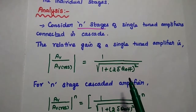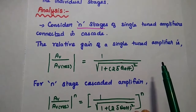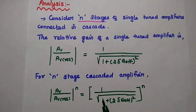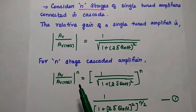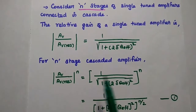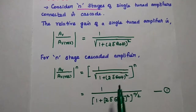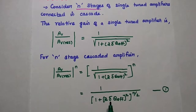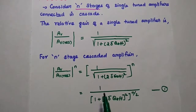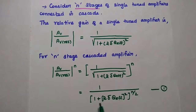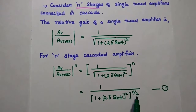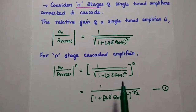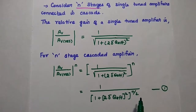This is the relative gain of a single-tuned amplifier. For an n-stage cascaded amplifier, we take the power n on both sides. This gives 1 divided by (1 plus (2·δ·Q_eff)²) raised to the power n/2, since the square root can be written as the exponent 1/2. Consider this as the first equation.